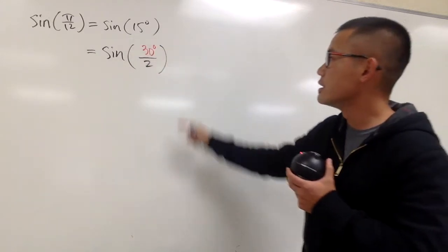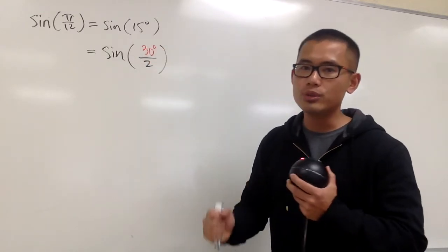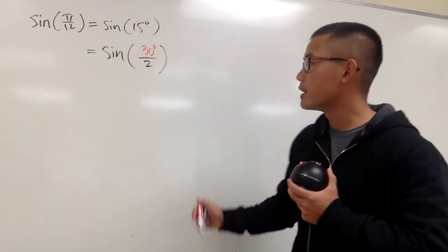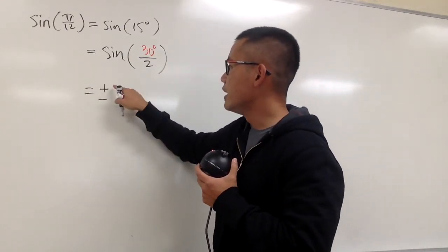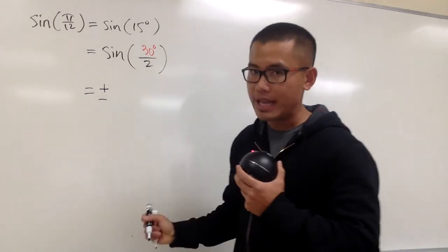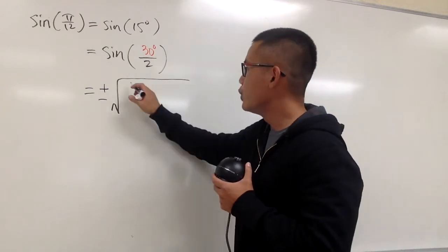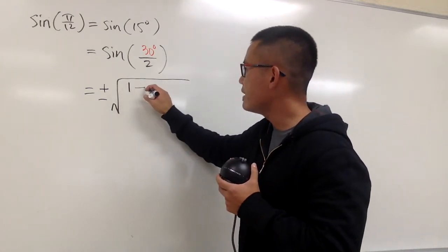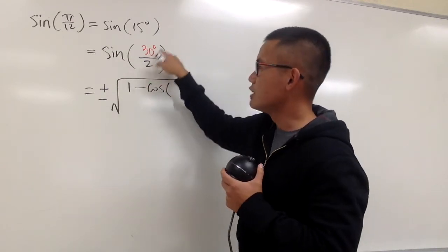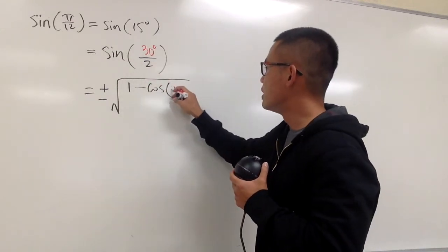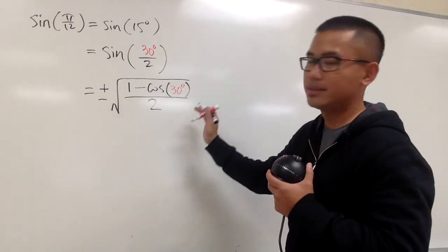The reason we want to do this is that we know 30 degrees much better, and also we can use the half angle formula, which says this is going to be—let me just put down the general formula—it will be plus minus for now, and then we open the big square root. Inside here we have 1 minus cosine of whatever this angle is, not over 2, this one. So it will be 30 degrees, and then over 2.